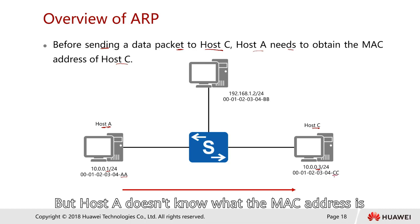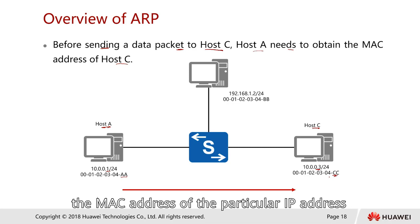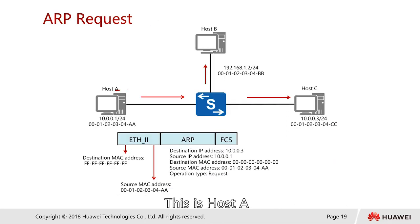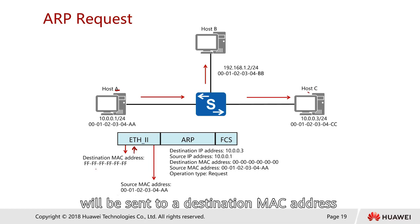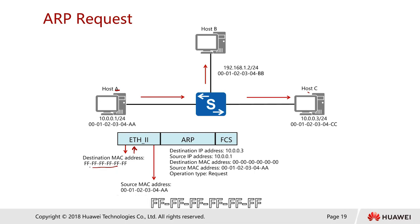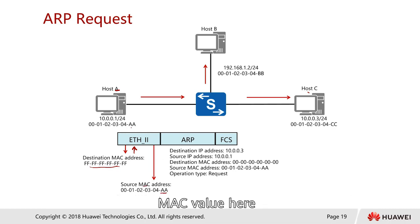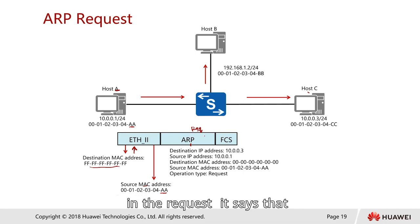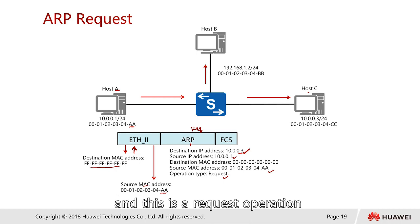Host A knows the destination IP address it intends to talk to, but from host A's point of view it doesn't know the MAC address. ARP helps to locate - or resolve - the MAC address of a particular IP address. So host A, at layer two, will send to a destination MAC address of FF:FF:FF:FF:FF:FF, which stands for broadcast. The source MAC carries its own MAC value, and the ARP request says: I'm looking for 10.0.0.3, I'm from 10.0.0.1, this is my source MAC, and this is a request operation.